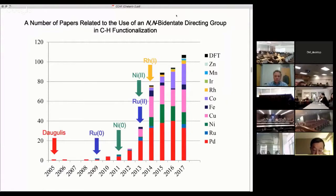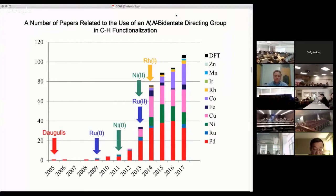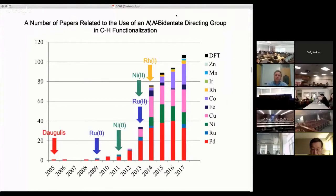In subsequent studies, we reported the first use of nickel(0) in 2011, and ruthenium(II) and nickel(II) in 2013, and rhodium(I) complexes in 2014 as catalysts in C-H functionalizations using a bidentate chelation system. Since then, the number of studies related to C-H functionalization reactions using a bidentate chelation system have increased year after year, with various catalysts now being employed.